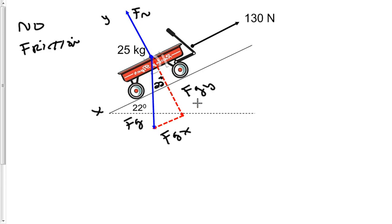Let's write what each of these should equal then. Force gravity y, then, is the adjacent side of this triangle, and the hypotenuse is force gravity. So the adjacent side is found by using cosine. Force gravity y, then, should be force gravity times the cosine of the angle theta.